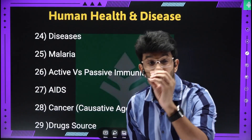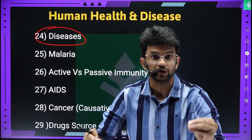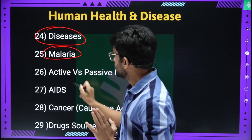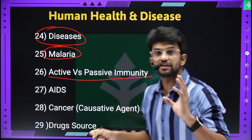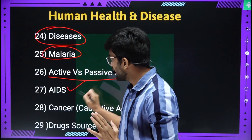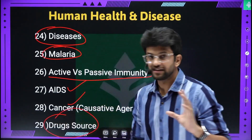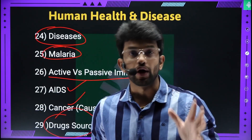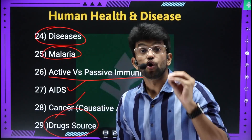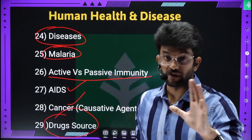Human Health and Disease. There are different types of diseases. Malaria is a very favourite exam topic — very important. Active and passive immunity — very important. Humoral immunity and cell-mediated immunity — very important. AIDS and cancer. Drugs — opioids — where are they obtained from? This is very important.